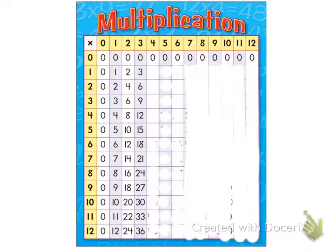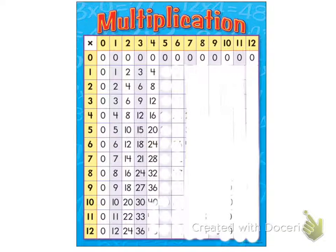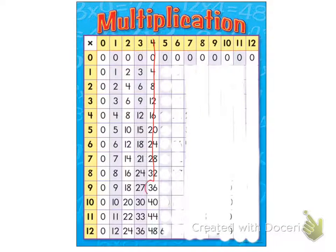Now let's count by fours. So we have four, eight, twelve, sixteen, twenty, twenty-four, twenty-eight, thirty-two, thirty-six, forty, forty-four, forty-eight. We go down to the ninth multiple, and that is thirty-six.